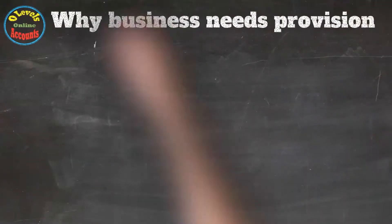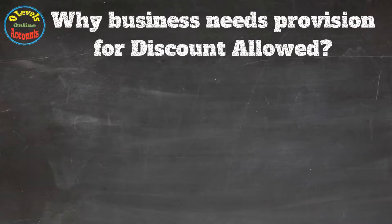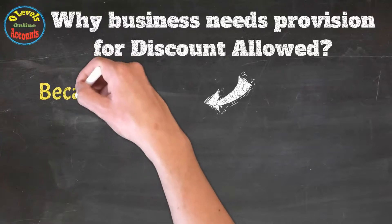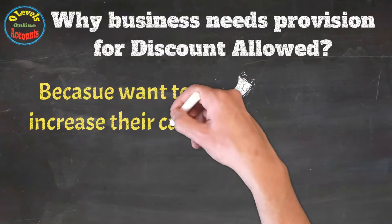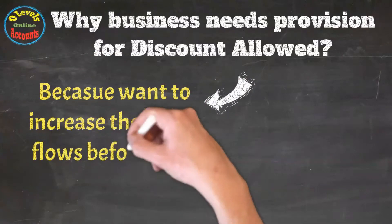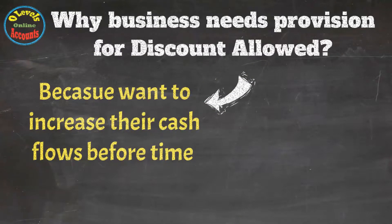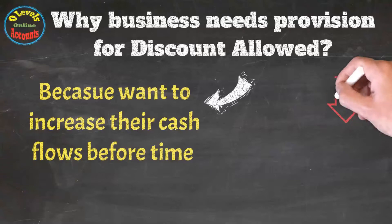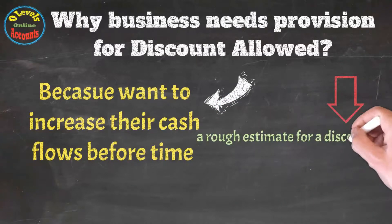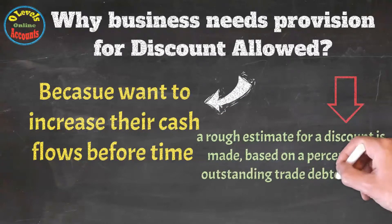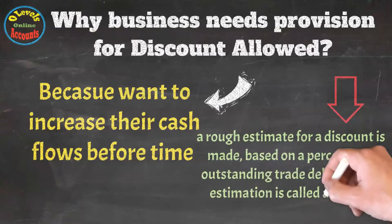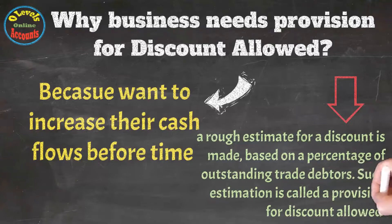Why does a business need a provision for discount allowed? The first reason is the company wants to increase their cash flows before time. So a rough estimate for a discount is made based on a percentage of outstanding debtors. Such an estimation is called a provision for discount allowed.